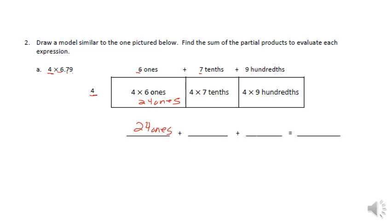Now I got four here times seven tenths, and I know four times seven is going to give me 28. So I'm going to have 28 tenths. The next one, I have four times nine hundredths. So four times nine is 36 hundredths.